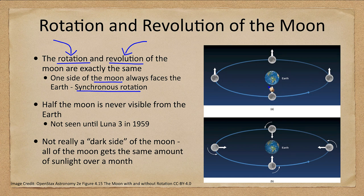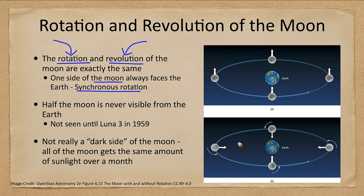If the moon were not rotating, we would see different sides as it orbits — one side would be constantly facing the same direction, so we'd see first one side then the other. However, when it rotates and revolves at the same rate, one feature on the moon pointing toward Earth is always pointing toward Earth. That means there's half of the moon that we always see — always the same half — and the other half is never seen.